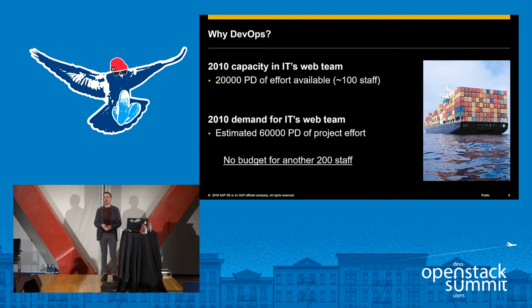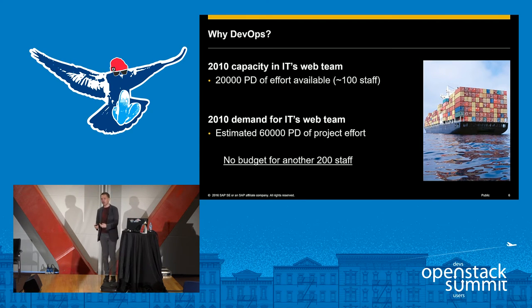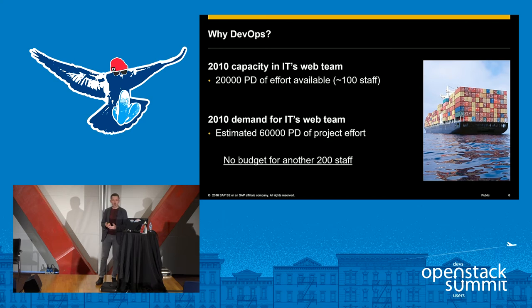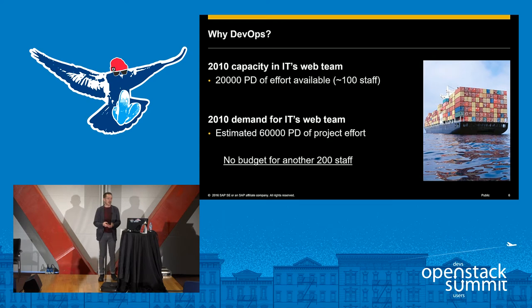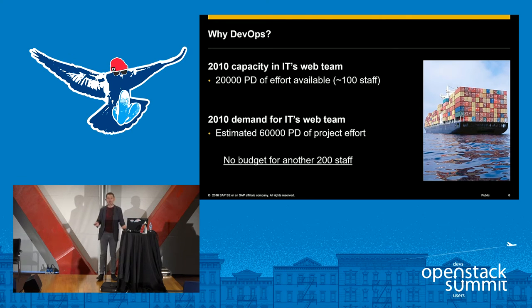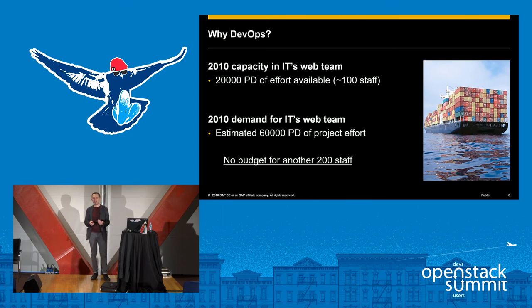Faced with that, you might ask why we thought of doing DevOps. As well as muddling along with that process, we came to a point where we looked at the demand forecast in the IT department for the coming year. With about 100 staff — roughly 20,000 person-days of effort — the demand coming in was for 60,000 person-days. There's no way we could get budget to hire another 200 staff, and we couldn't even ramp that up in time. Doing what was demanded of us was impossible if we kept doing it the way we were.